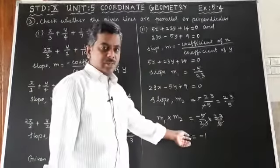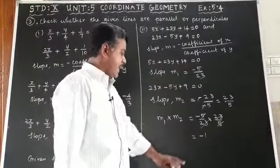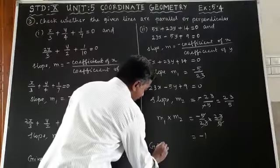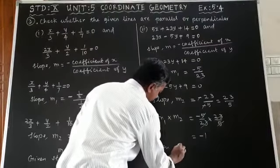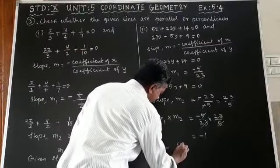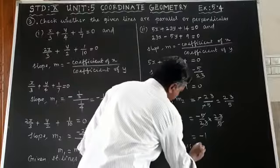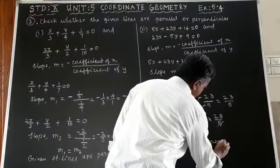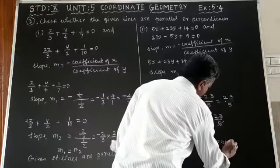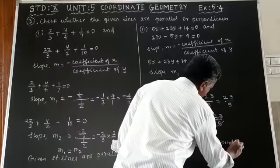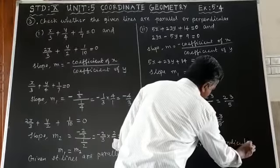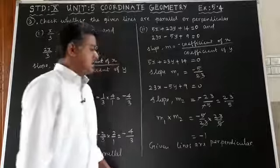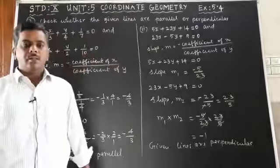Since m1 × m2 = -1, therefore the given lines are perpendicular. That is all. Thank you.